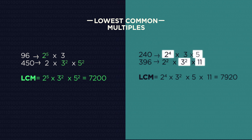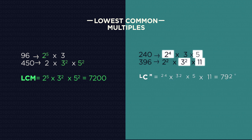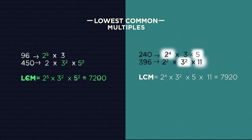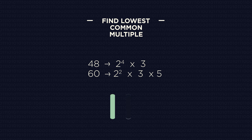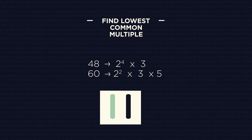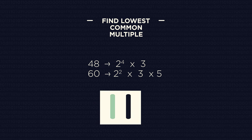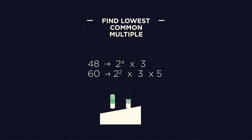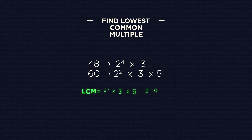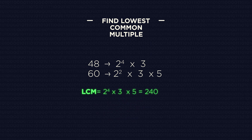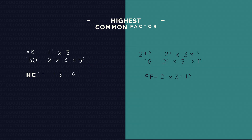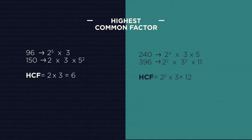Here's one for you to do — pause the video, find the lowest common multiple, and click play when you're ready. Did you get 240? So now on to the highest common factor; it's a very similar process, but just slightly different.